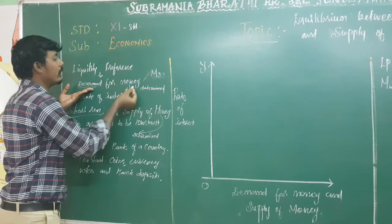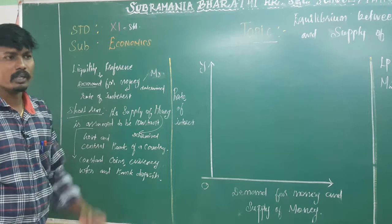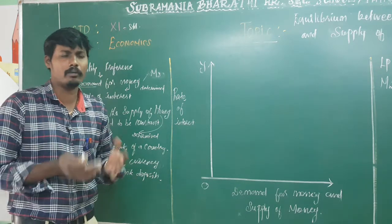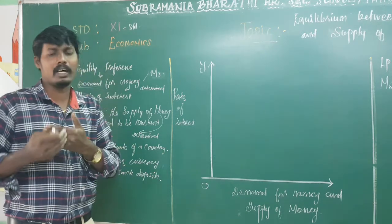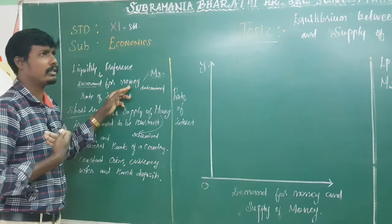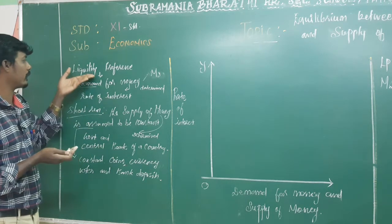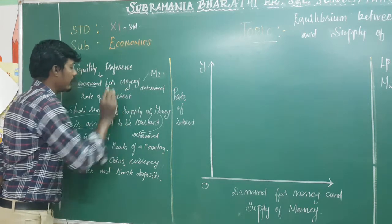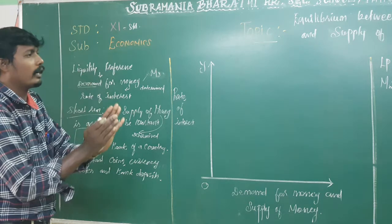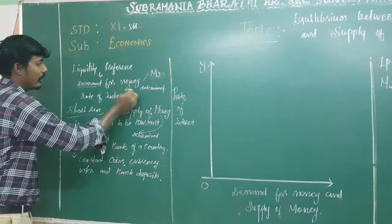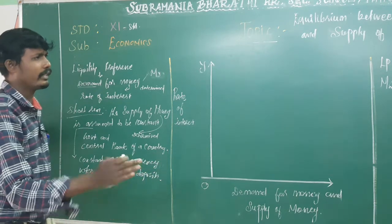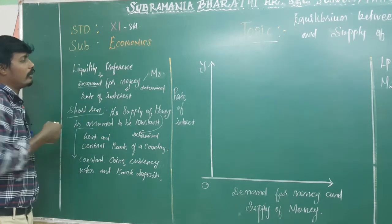The idea is: the demand is defined as the liquidity preference. Money is defined as the purchasing power of money. So, how do we determine the rate of interest through liquidity preference?